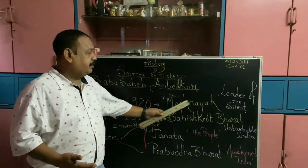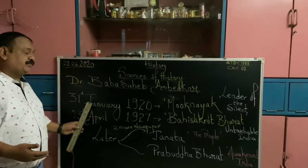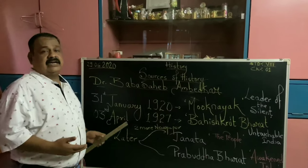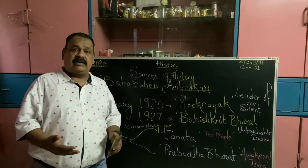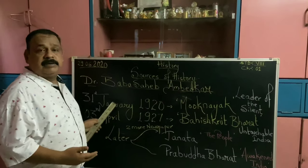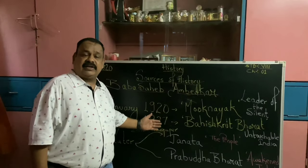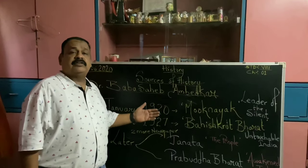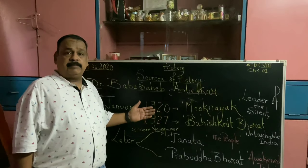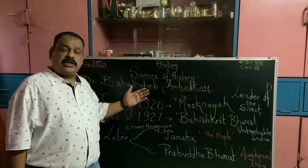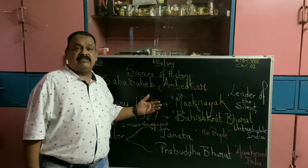Now what is the meaning of the word Muknayak? It means 'leader of the silent.' When he started this newspaper on the 31st of January 1920, he started it with the help of Chhatrapati Shahu Maharaj of Kolhapur, who also funded the newspaper. Now why is there a big gap between 1920 and 1927? It was during this time that Bhimrao Ramji Ambedkar went to England for further studies. While going to England, he handed over the publishing of his newspaper to his colleagues.